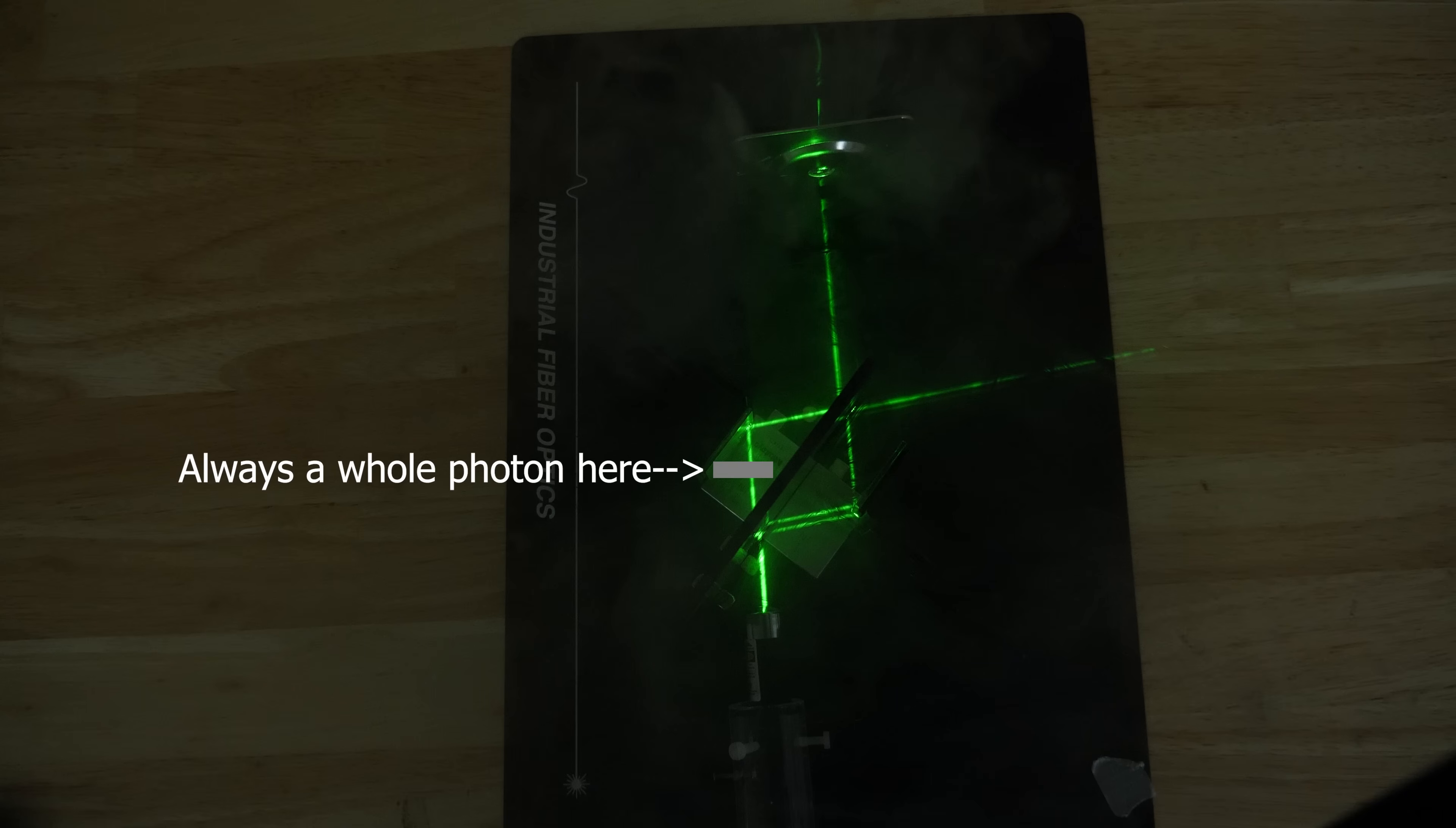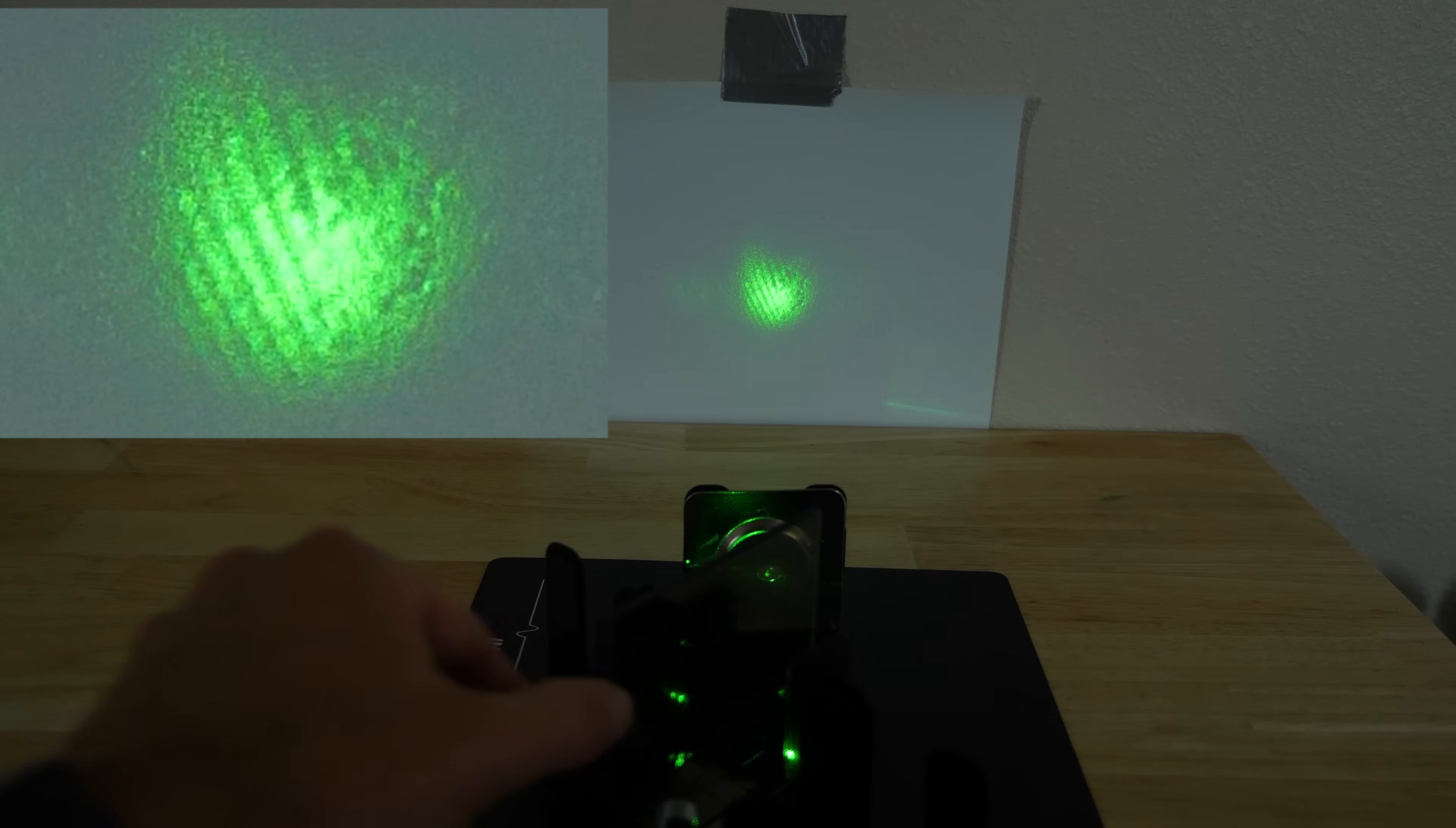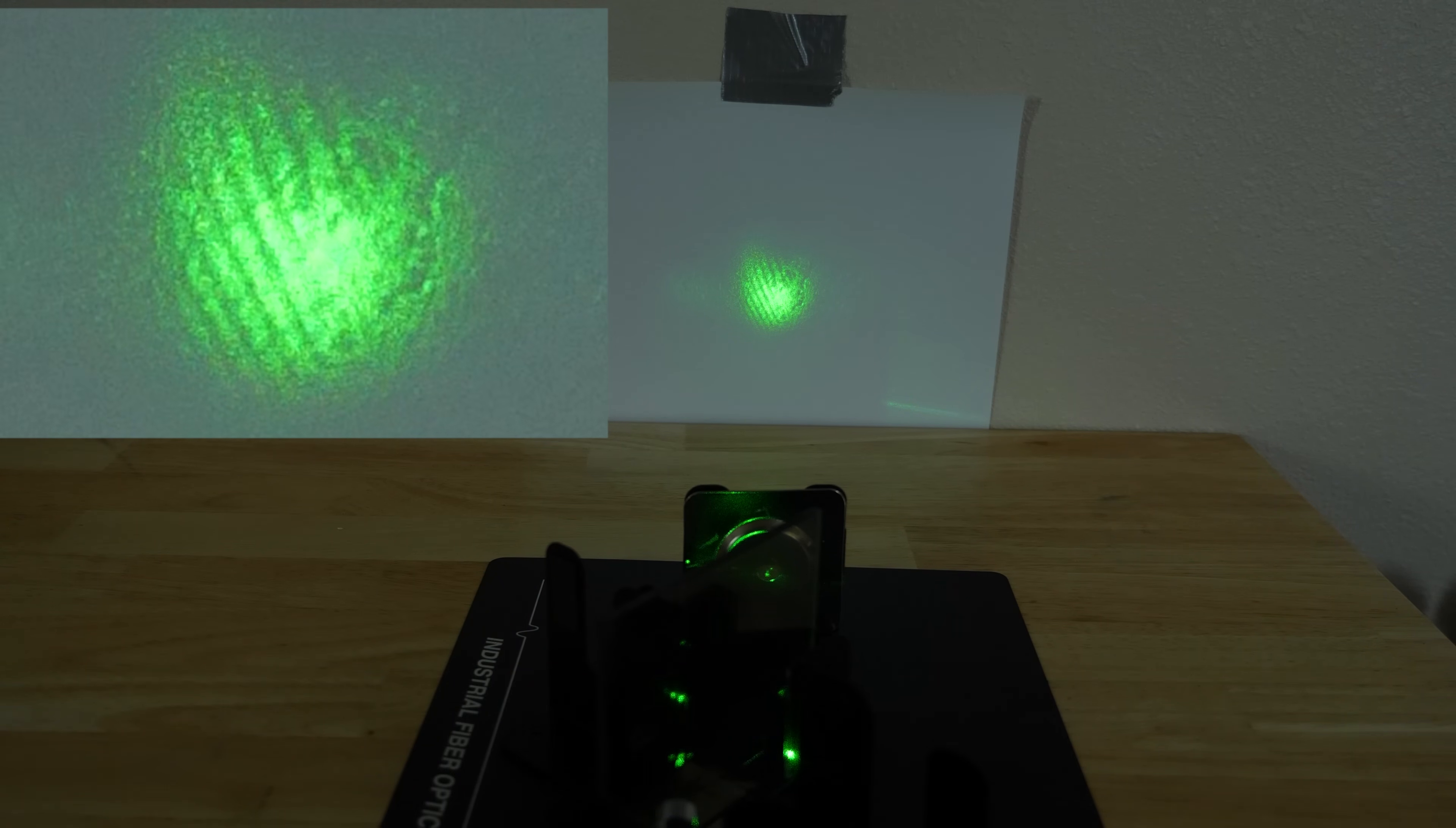In fact, we can stick the detector anywhere in the path of the light, and we always show that it is whole photons that hit the detector. There's no indication that these photons are being split up or traveling in both paths. But we also know that light acts like a wave when we have the second beam splitter there.